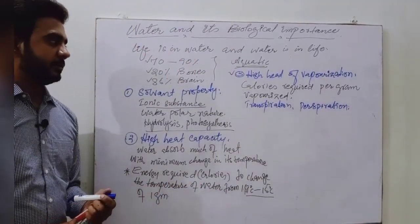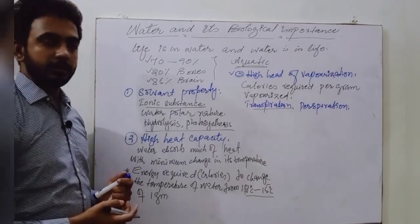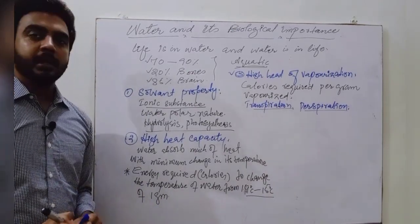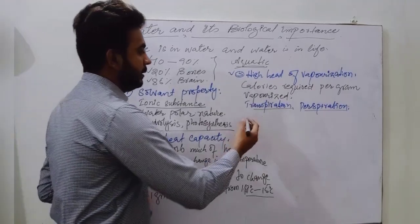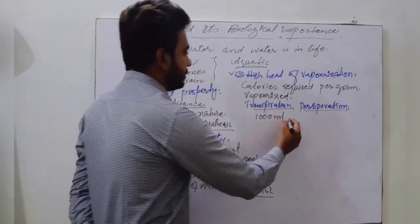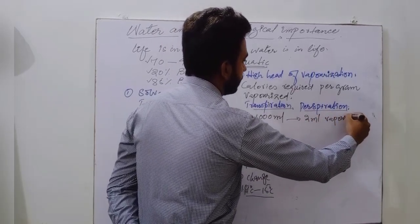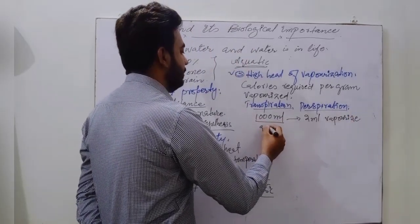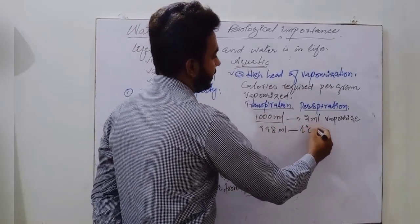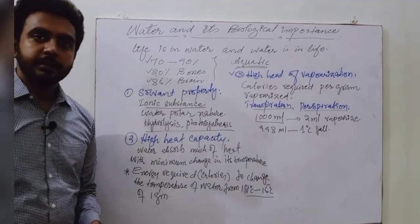Within the organisms, in plants transpiration produces cooling effect, and perspiration in animals. If we take one liter of water, that is thousand ml, if 2 ml get vaporized from thousand ml, then the remaining 998 ml, their temperature falls 1 degree centigrade. This is one of the importance. That's why water causes cooling effect.